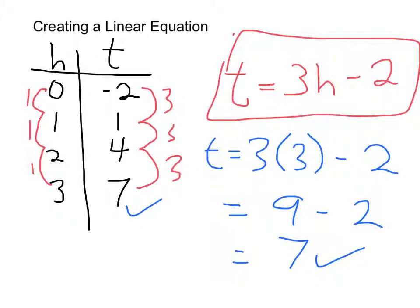Just to reiterate: all you need to do is see how much the dependent variable increases, and see how much the independent variable increases. The independent variable will almost always increase by 1 — it would be very rare for me to give you a case where it doesn't, because it gets a lot harder to come up with your equation from there. Here it increases by 1, this increases by 3. Because this increases by 3 every time this increases by 1, this must always be 3 times this. Then we saw that 3 times 0 gives less than expected, so we also subtract 2.